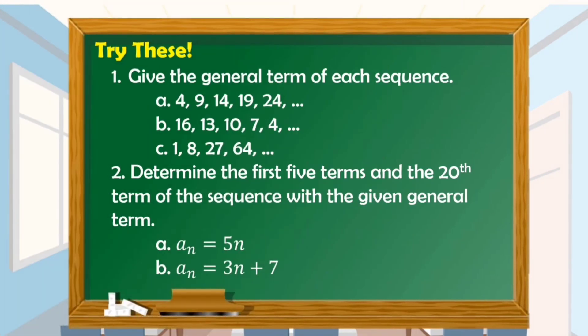You may try answering this activity. You may pause this video to answer on your paper. Give the general term of each sequence: A) 4, 9, 14, 19, 24; B) 16, 13, 10, 7, 4. For number 2, determine the first 5 terms and the 20th term of the sequence with the given general term: A) a sub n is equal to 5n; B) a sub n is equal to 3n plus 7.